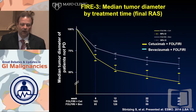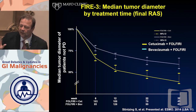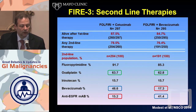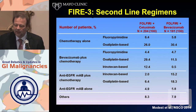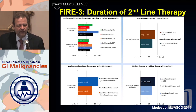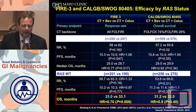We have a lot of data from FIRE-3 on what happened to tumors and second-line therapy outcomes, which helps us understand why there is a difference in overall survival and whether there is some bias. You can clearly see the median tumor diameter over time — cetuximab is clearly able to induce an earlier, more profound response. At least numerically, there is no difference in actual exposure to second-line therapy. We have data on second-line regimens, duration of second-line therapy, and it seems the duration of second-line therapy after prior cetuximab may be slightly longer.